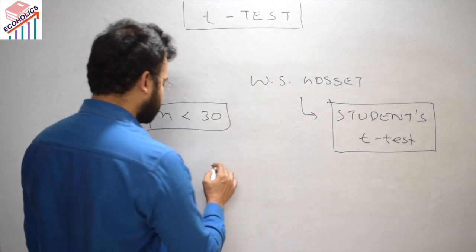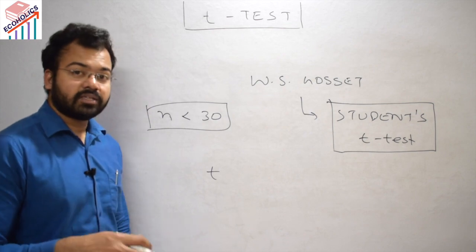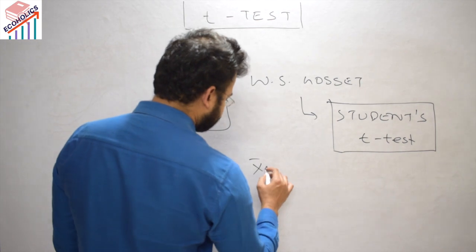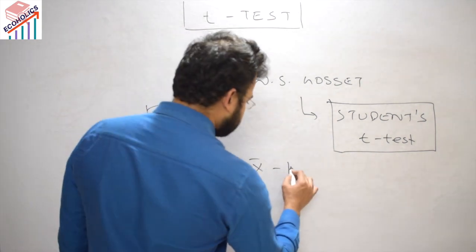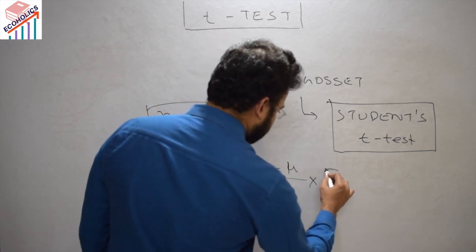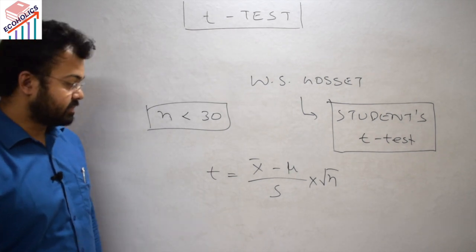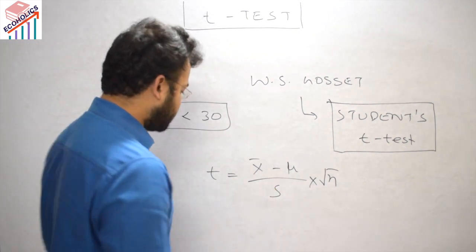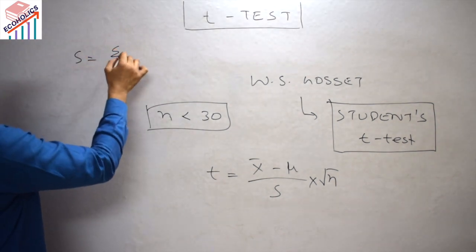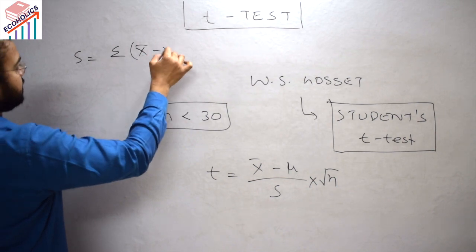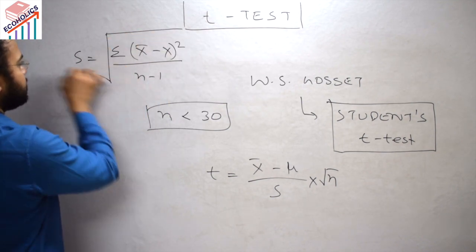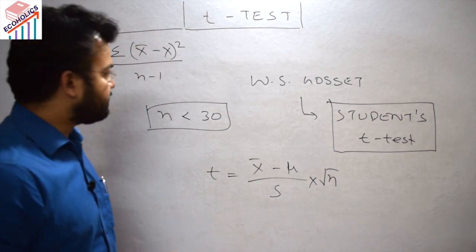The formula of the t-test — how you write the t-statistic — is: t equals x-bar minus mu, divided by your standard deviation s, multiplied by the square root of n, where n is your sample size. The formula for standard deviation s is: the square root of the summation of (x-bar minus x) squared, divided by n minus 1.